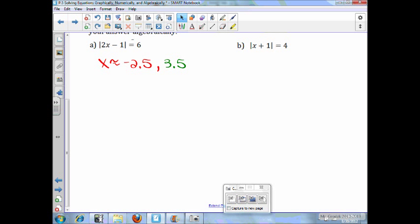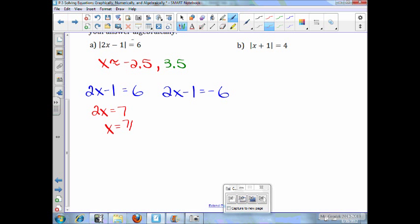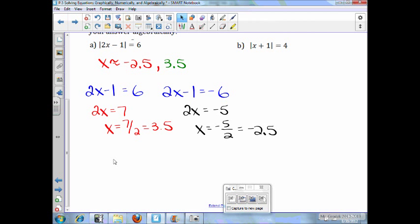Now, to confirm this algebraically, what we're going to do, 2x minus 1 equals 6. So, we're going to have 2x equals 7, x equals 7 over 2, which is 3 and a half. And here, 2x equals negative 5, x equals negative 5 over 2, which is negative 2 and a half. There is your solution confirmed algebraically. So, these are your correct answers.